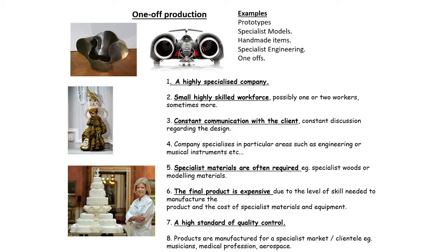Examples of one-off production include handmade furniture, wedding dresses, prototyping, and certain applications in medical or aerospace fields where only one or two items are ever made.